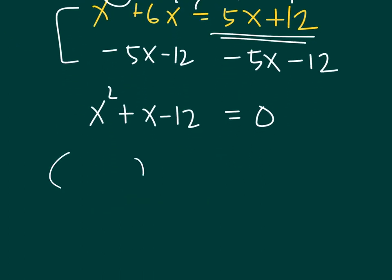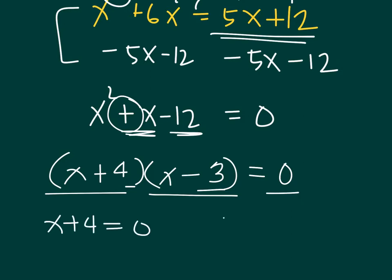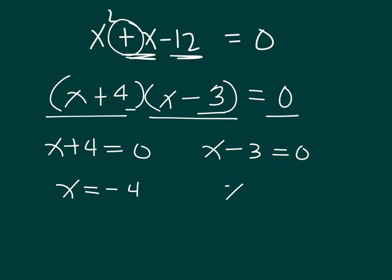Factoring x² + x - 12: we need factors of -12 whose sum is 1. The factors 4 and 3 work, giving (x+4)(x-3) = 0. Setting each factor to zero: x = -4 or x = 3.